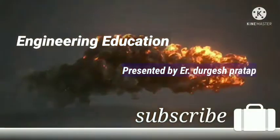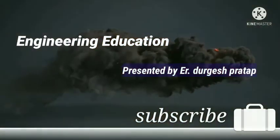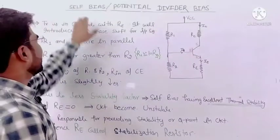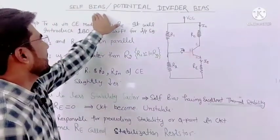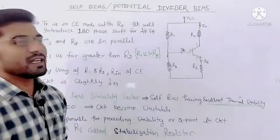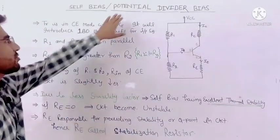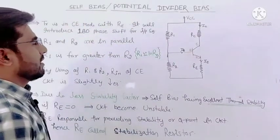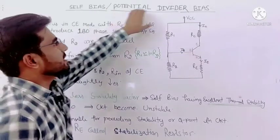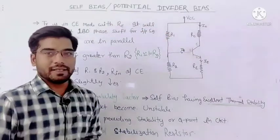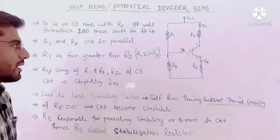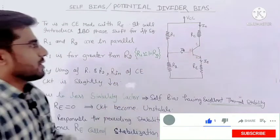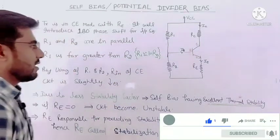Hello everyone, today I am going to discuss a very important topic: potential divider biasing. It is also known as self biasing and also known as voltage divider biasing. This is very important because with the help of potential divider we can stabilize our transistor circuit.